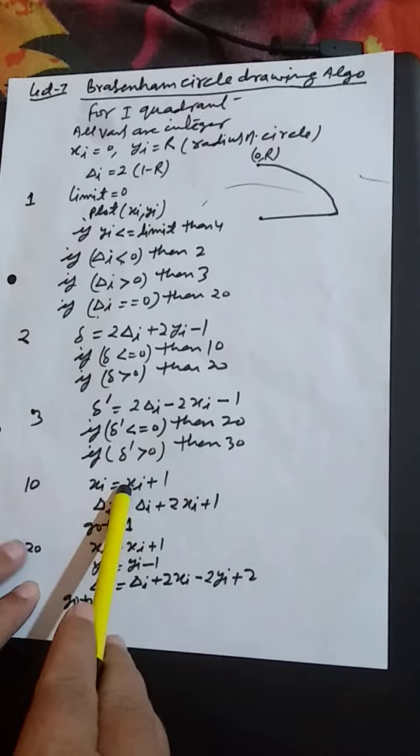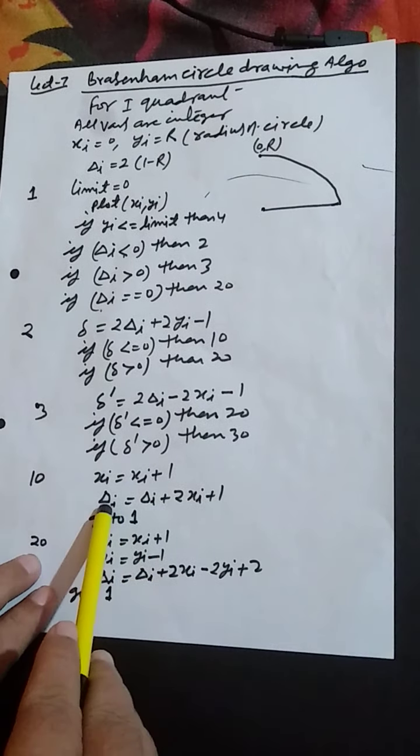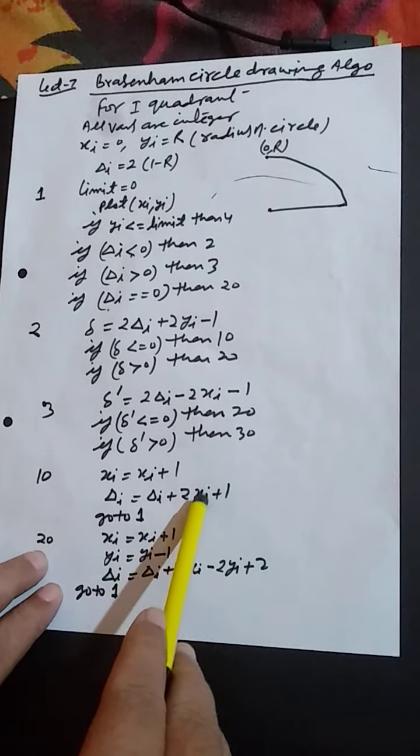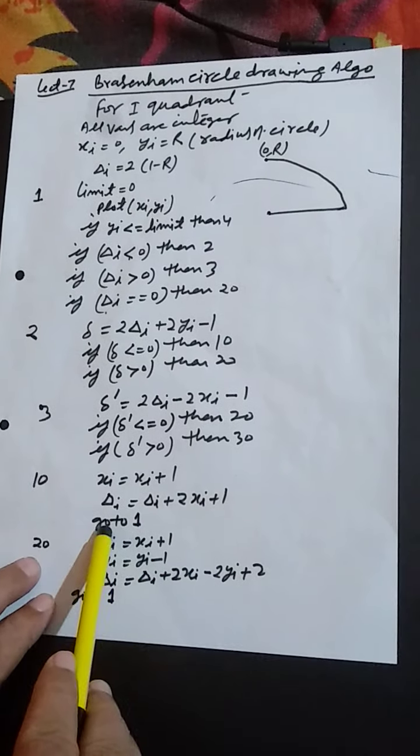On level 10, xi equal to xi plus 1, delta i equal to delta i plus 2xi plus 1, go to 1.